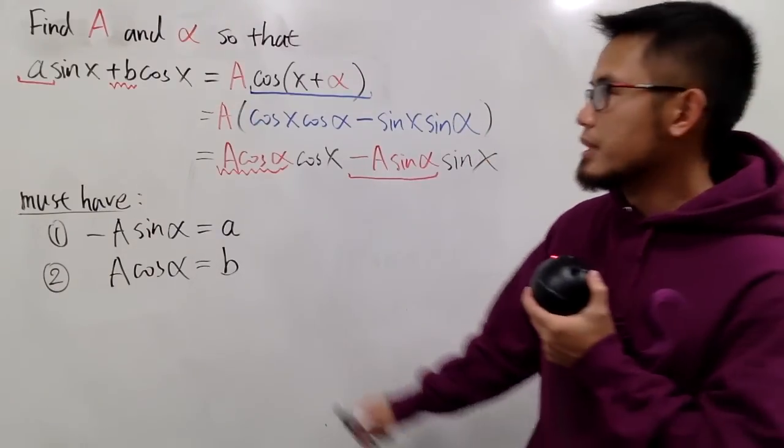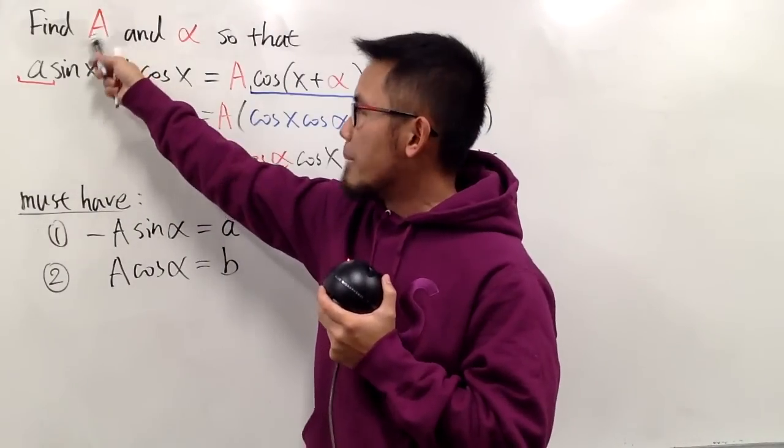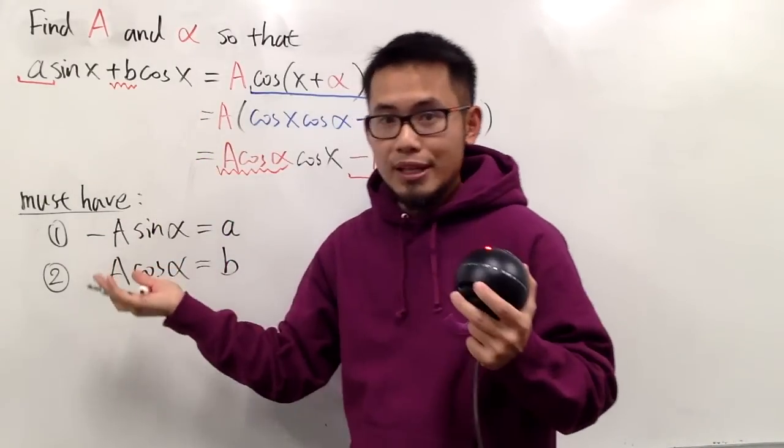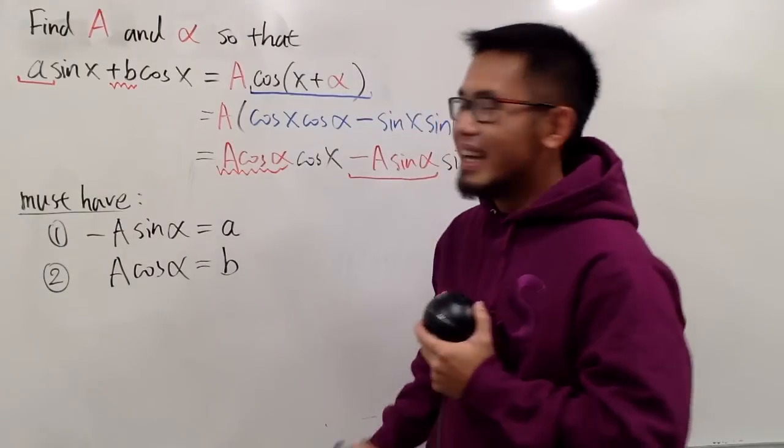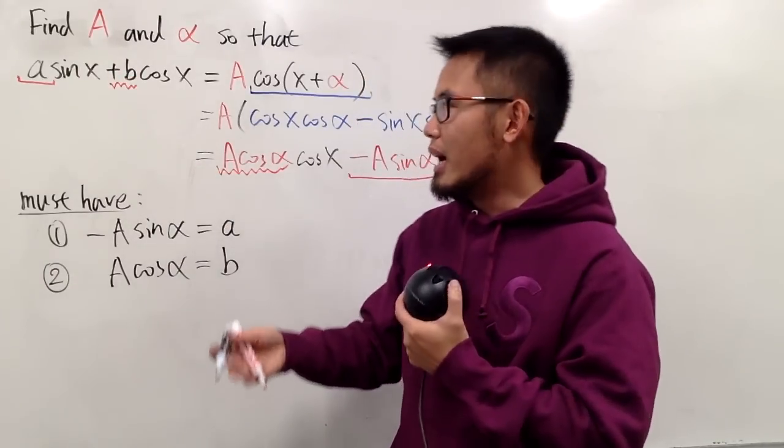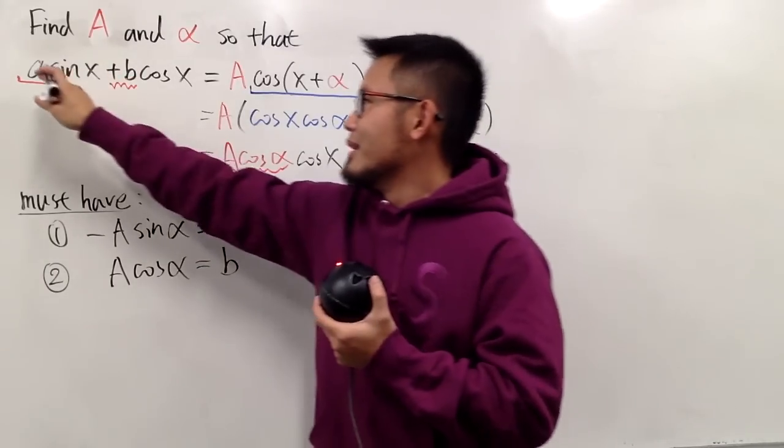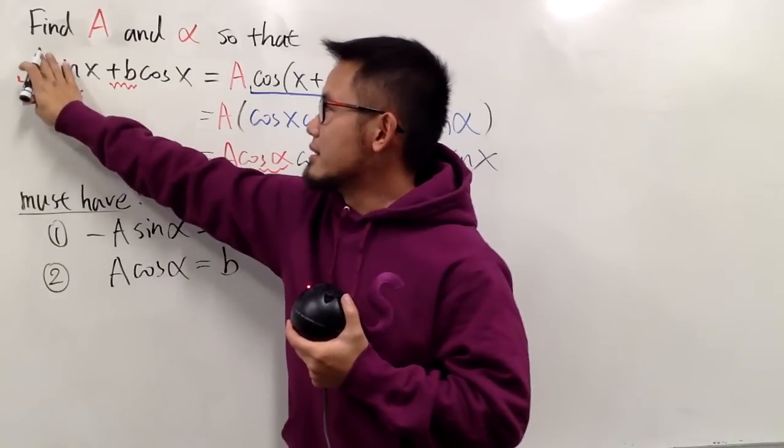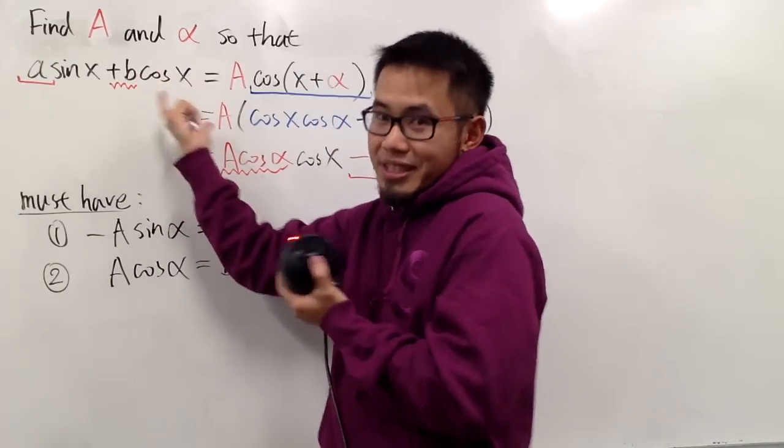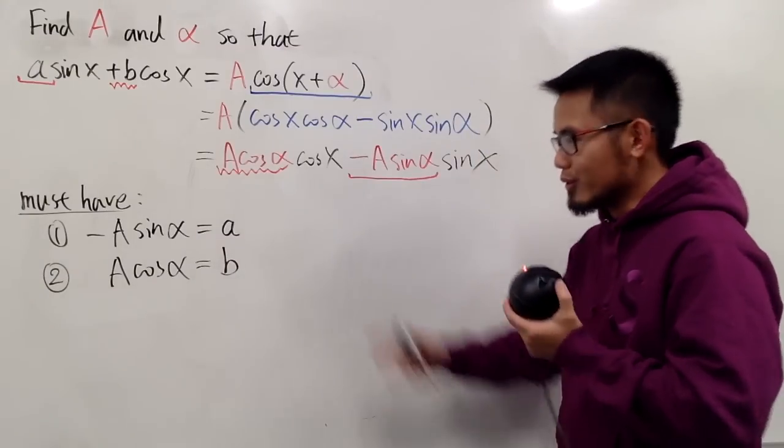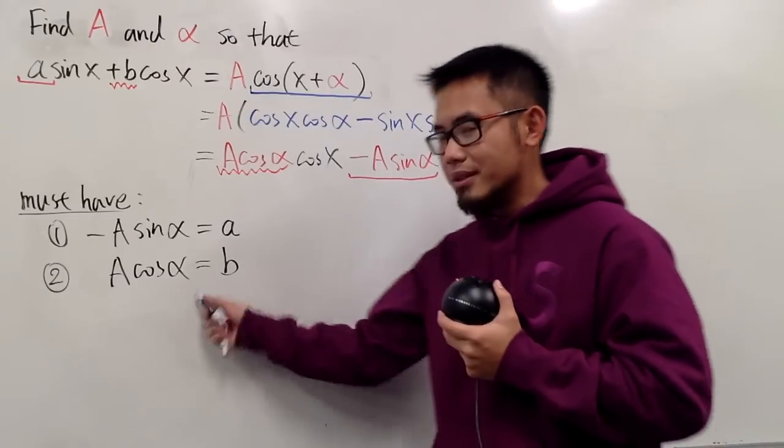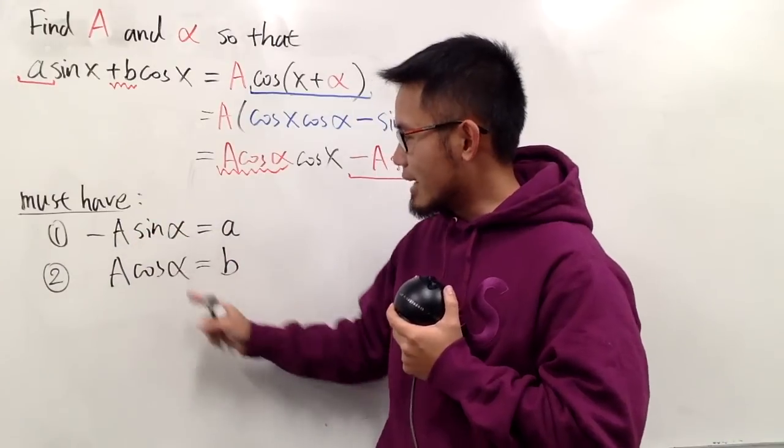Keep in mind, our goal is to find the conditions on capital A and alpha, and little a and little b, they are supposed to be given. And, of course, we have to assume that little a and little b, they are not both equal to zero. And, in fact, I don't want anyone to be zero, because if a is zero right here, it's boring, because you have just this part already, which is easy enough to deal with. Although, this formula is still going to work, but why bother with this? But anyway, this is what we have. This is equal to that, this is equal to that.